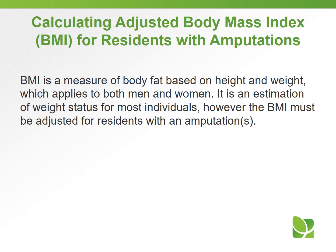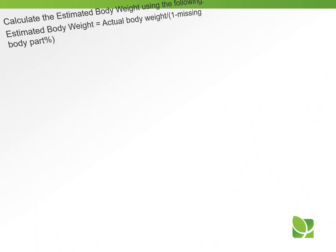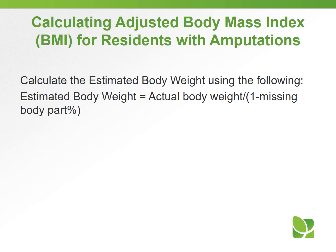BMI is a measure of body fat based on height and weight which applies to both men and women. It is an estimation of weight status for most individuals. However, the BMI must be adjusted for residents with an amputation or amputations. To calculate the estimated body weight, use the following formula: estimated body weight equals actual body weight divided by 1 minus the missing body part percentage.